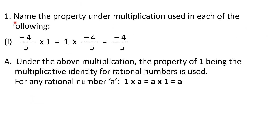Question number 1 has got 3 parts. The question says: name the property under multiplication used in each of the following. Part 1 is: minus 4 upon 5 into 1 is equal to 1 into minus 4 upon 5 is equal to minus 4 upon 5. The answer is: the property of 1 being the multiplicative identity for rational numbers is used. Remember that 1 is known as the multiplicative identity. In standard form, for any rational number a, 1 into a is equal to a into 1 is equal to a.